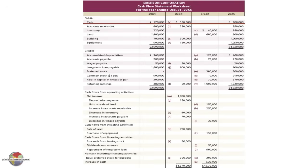In the 20X4 column, the end of last year, we had $170,000 in cash. And at the end of 20X5, we had $700,000 in cash — that's an increase in cash of $530,000. We note that cash is debited $530,000 to get to the ending balance, and we're going to drop an offsetting credit in the lower portion of the spreadsheet reflecting the increase in cash. Obviously, that number is needed to complete a Statement of Cash Flows.